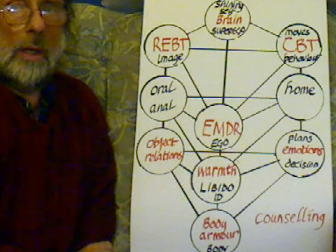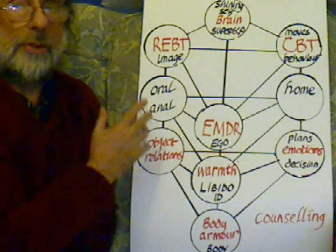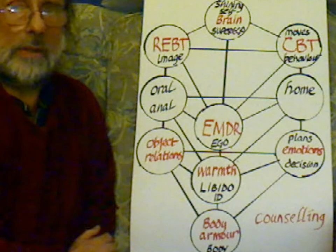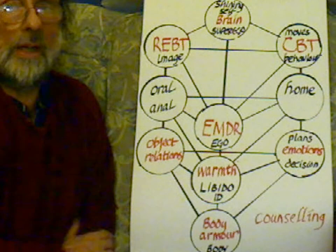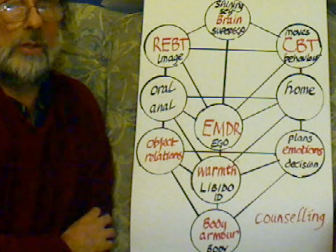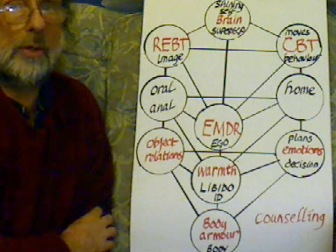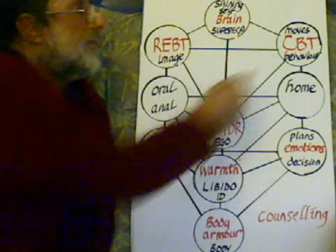So in the Upanishads we have the two birds, the two hemispheres. This has come down to us now with Dr. Schiffer and dual brain psychology — the idea that we have two minds.